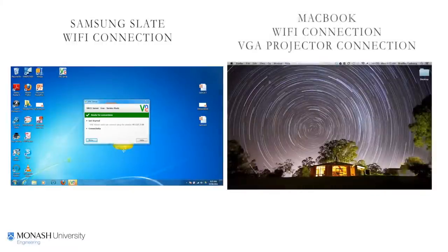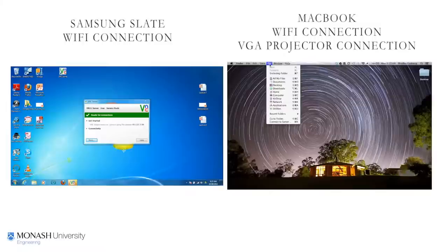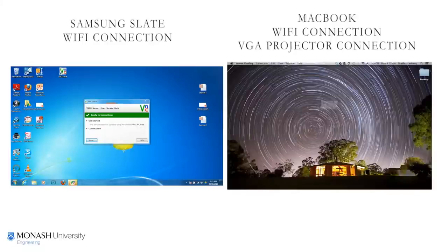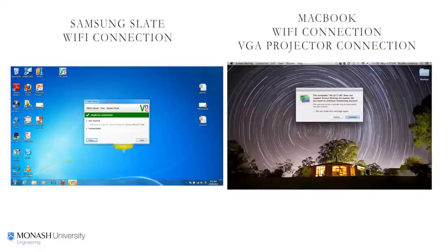We've got the MacBook on the same Wi-Fi network as the Slate. We just go on the Go menu and connect to server, and type in VNC colon double backslash and then that IP address, and click to connect.